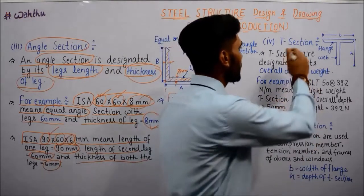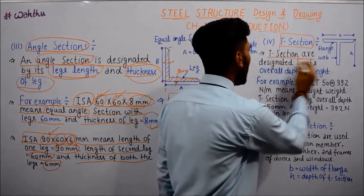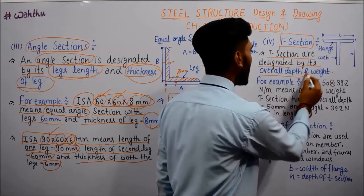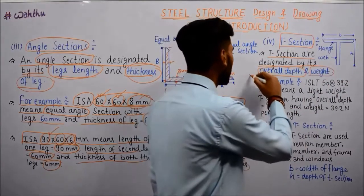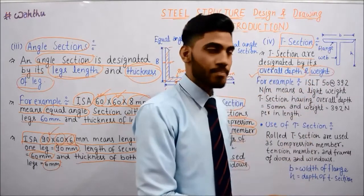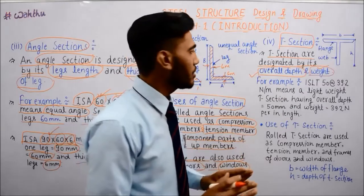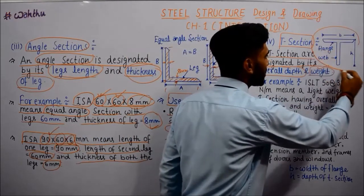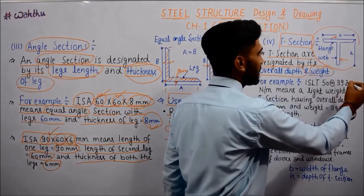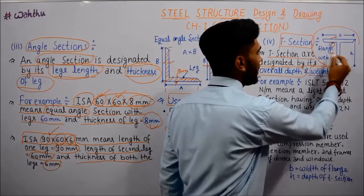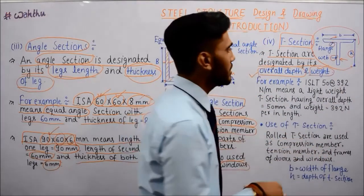Next, the T-section. T-sections are designed by their overall depth and weight. The T-section has an upper flange and a web. The height is the depth of the section.